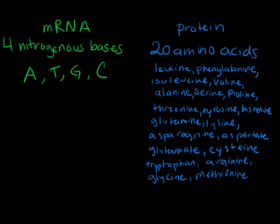Before we move any further — hopefully you should recognize — remember that RNA does not have thymine in it. Instead it uses uracil. So sorry about that. mRNA has four nitrogenous bases and is a single strand of nucleotides made up of A's, U's, G's, and C's.